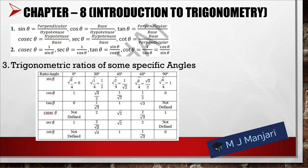Then we have trigonometric ratios for some specific angles — especially 0°, 30°, 45°, 60°, and 90°. You can see all the values in this table.